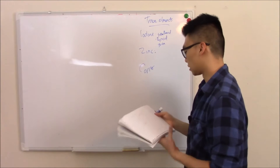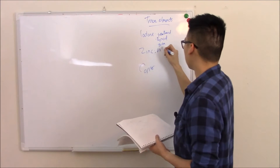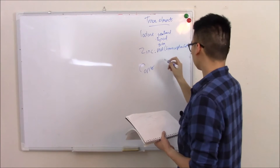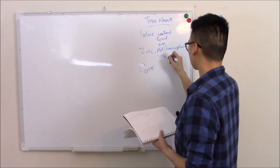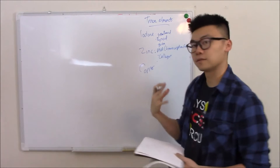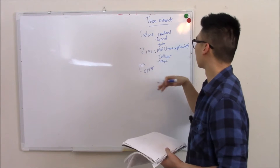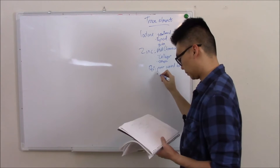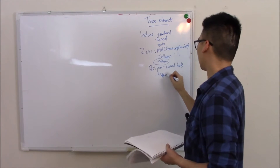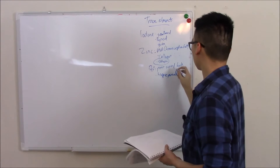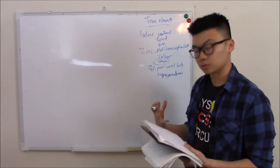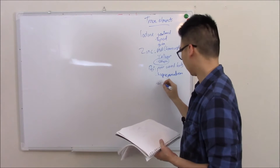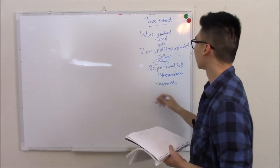Zinc does hundreds of things. This includes working in DNA as transcription factors. It's seen in collagen and also is found in semen. Deficiency causes poor wound healing, hypogonadism, and finally you get this rash around your face and your bum called acrodermatitis enteropathica.